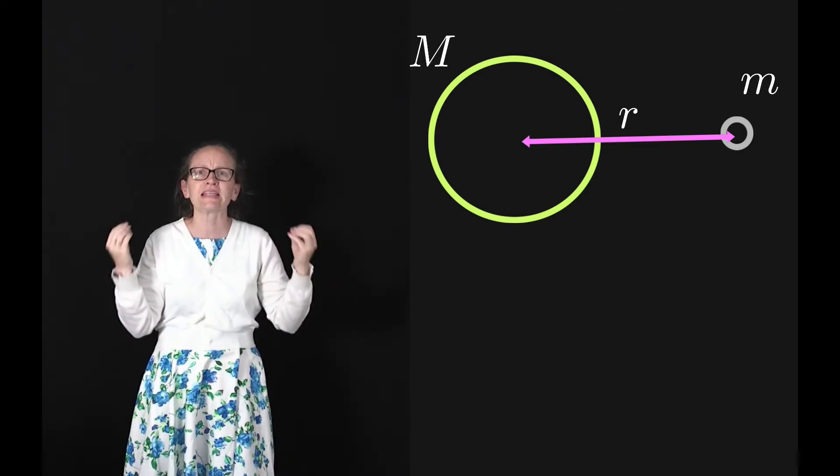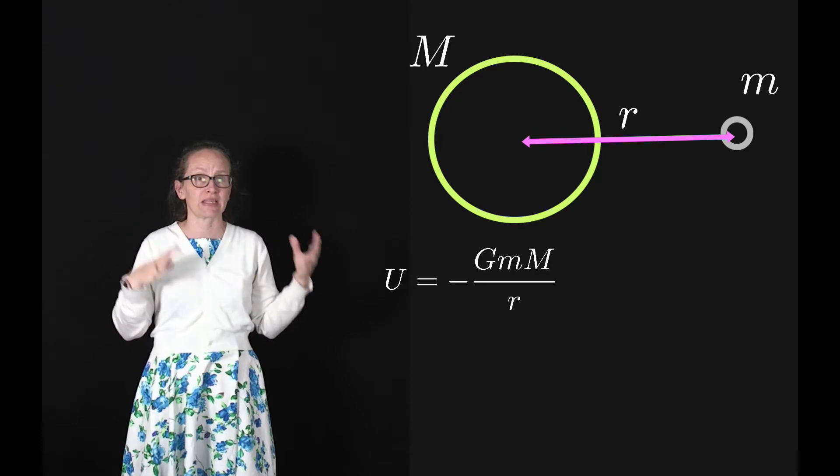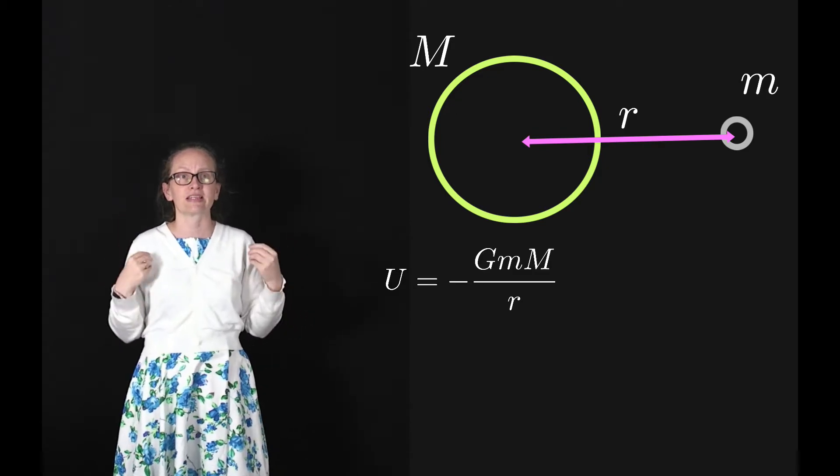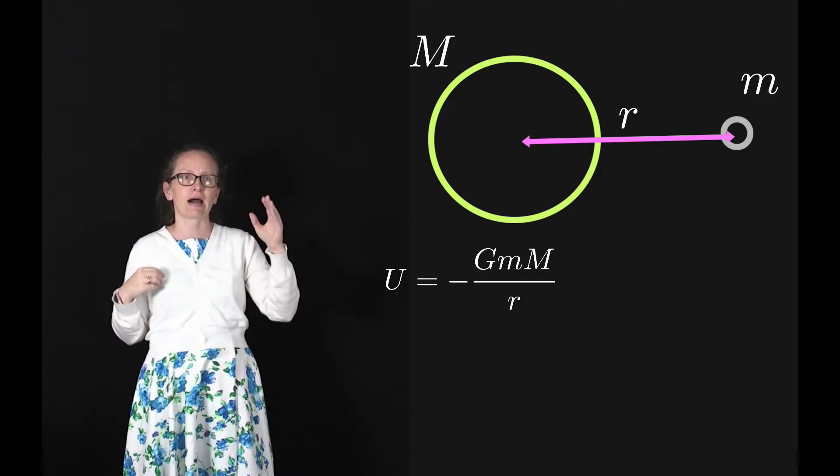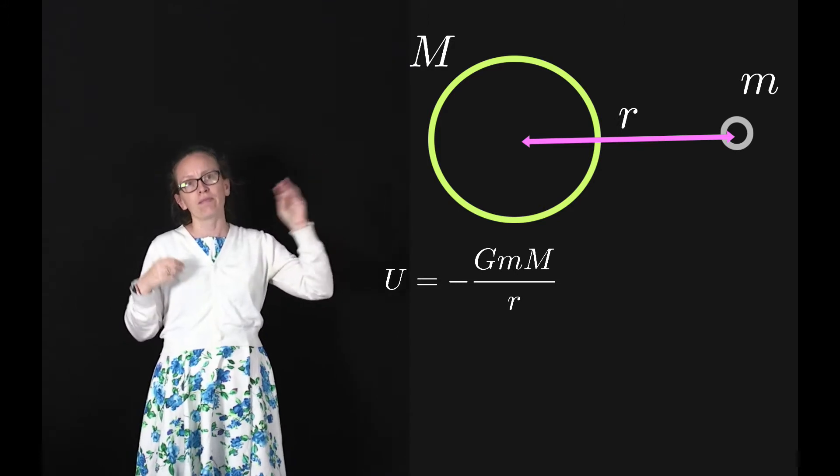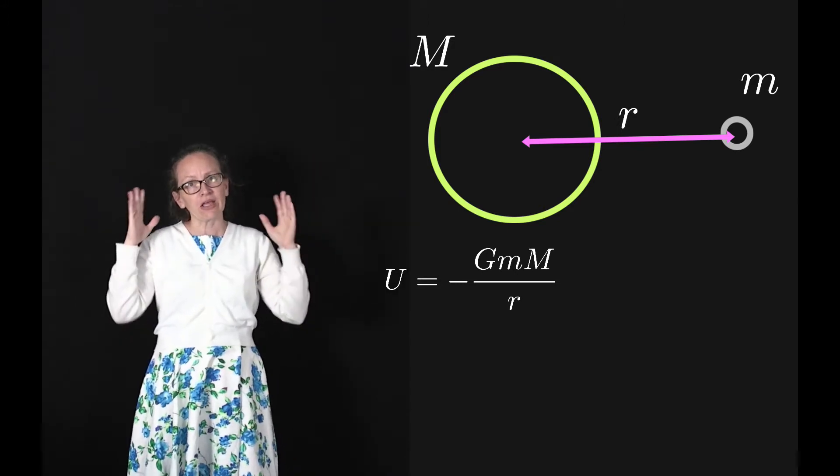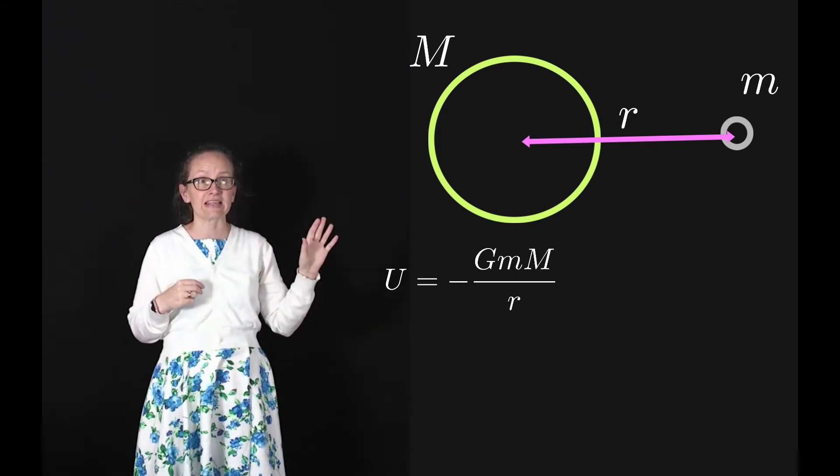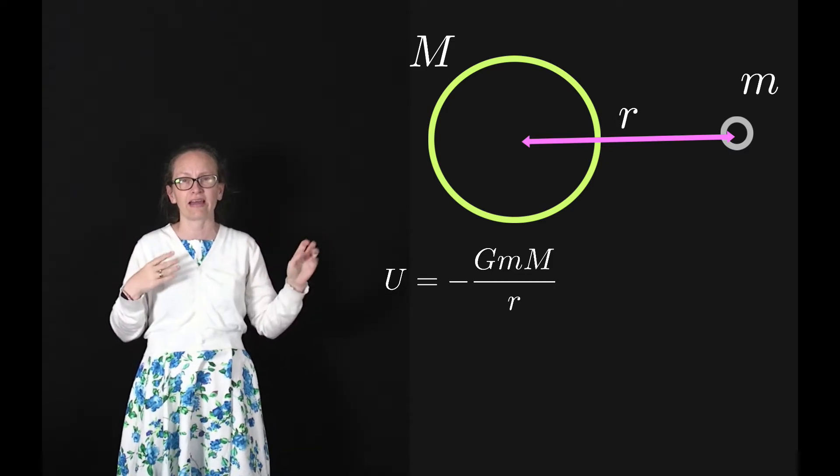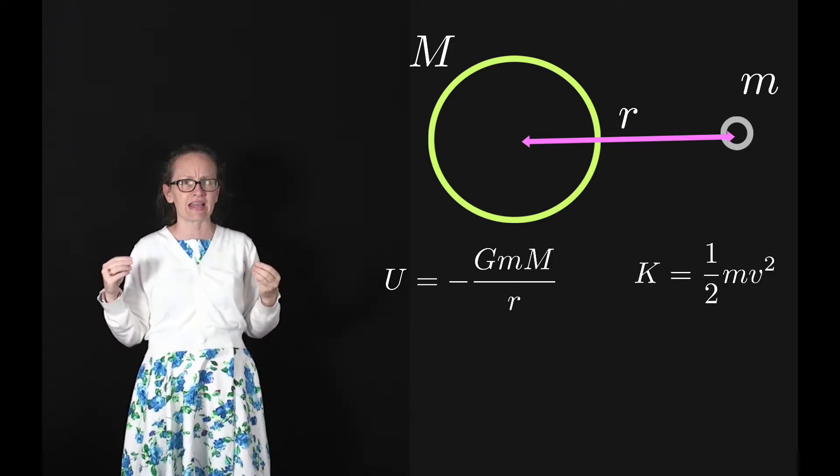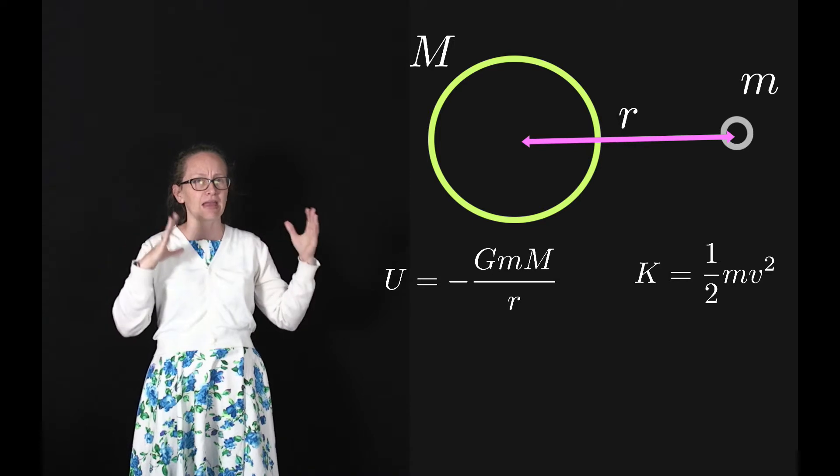We've already seen that the gravitational potential energy U is given by U = -GmM/r. Now we can also calculate the kinetic energy for this satellite. We know that kinetic energy is given by K = (1/2)mv².